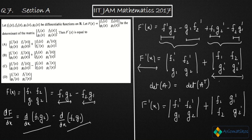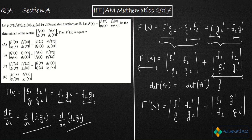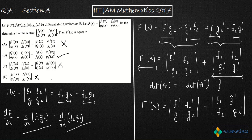This is a very simple result. So option C is false because it does not match your answer, and D is also incorrect. Option B is the correct answer. This is how you should proceed in your exam. It's a very easy question — just two calculations, and you can solve it in about one or two minutes.